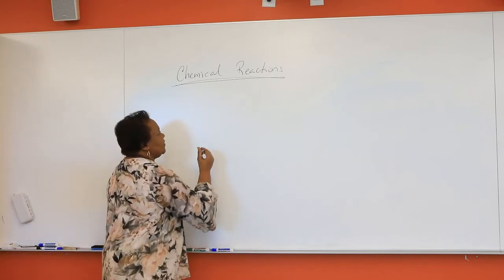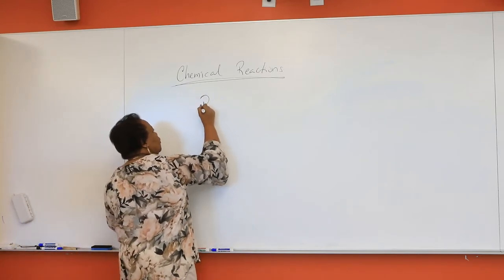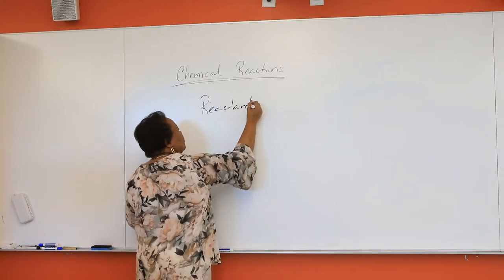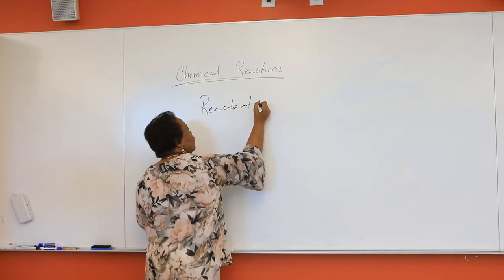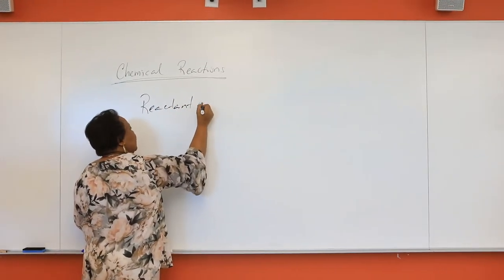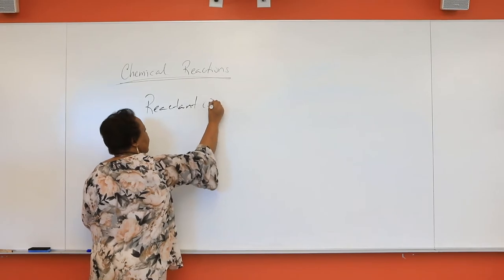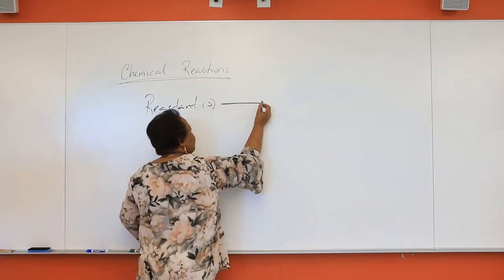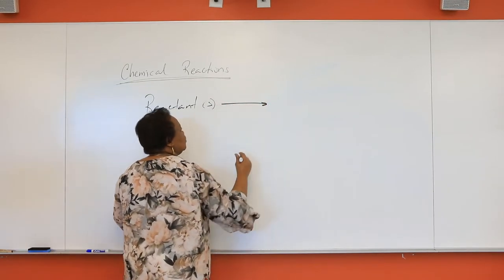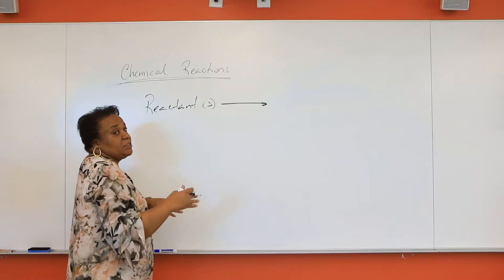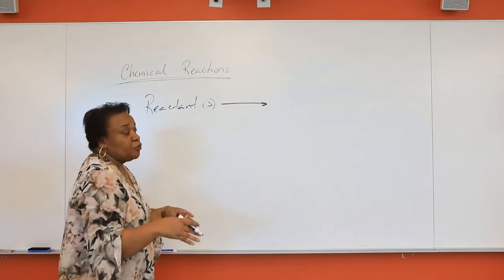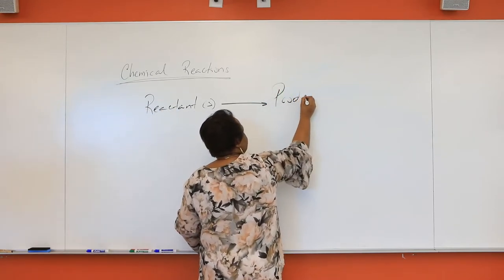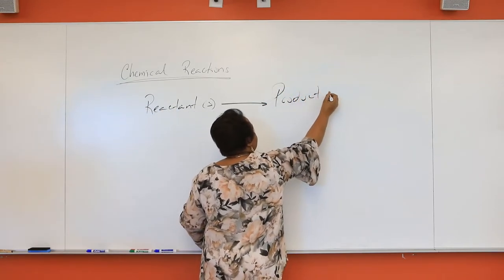What do I mean by that? Well, it will involve writing the reactant on the left, followed by that arrow that says it yields, it produces, or it affords your product on the right.